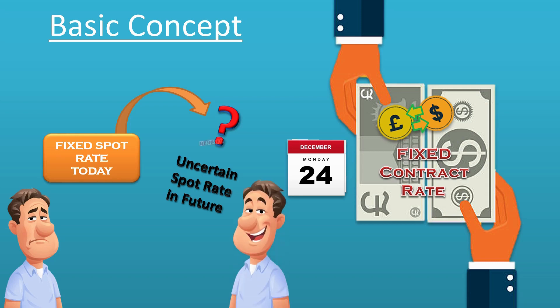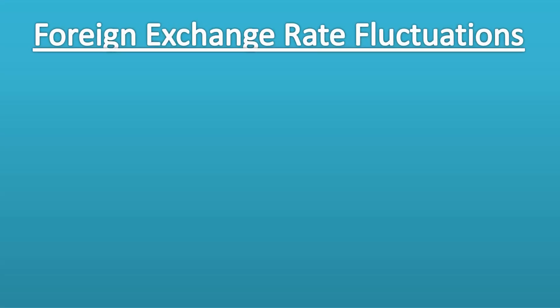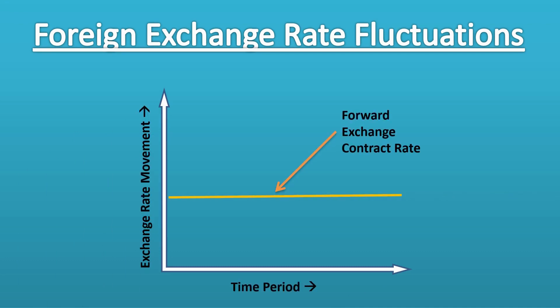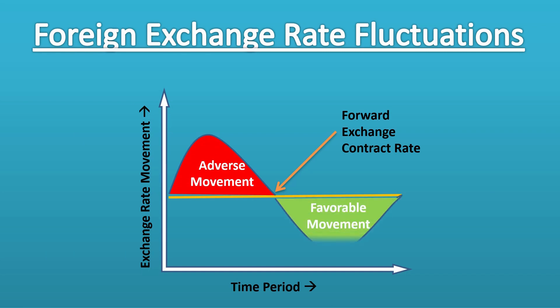This removes uncertainty about what the exchange rate will be at the future date. Currency risk is a two-way risk. By arranging a forward contract, a company can hedge against the risk of an adverse movement in the spot exchange rate up to the date of settlement, but at the same time it loses the opportunity to gain from a favorable movement in the spot rate.